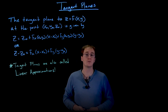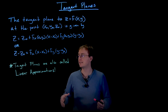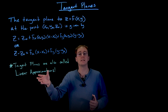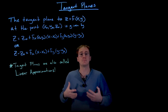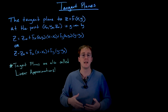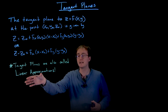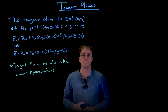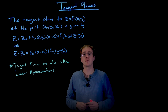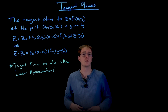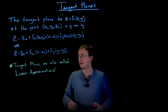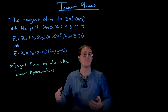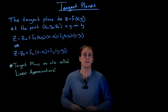One quick note: another name for a tangent plane is a linear approximation. A tangent plane is a linear multivariable function that best approximates the surface at the point of interest, so another name for that is the linear approximation for our function or surface. If you're asked to find the linear approximation for a multivariable function, that's just asking you to find the tangent plane for that function.